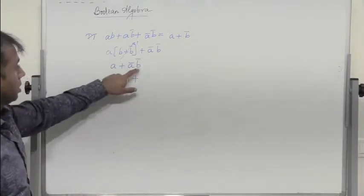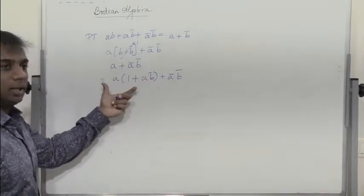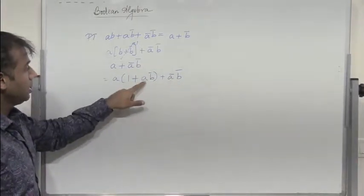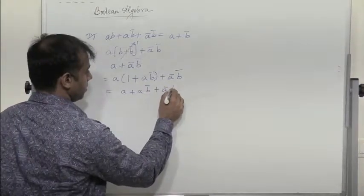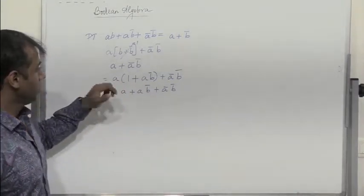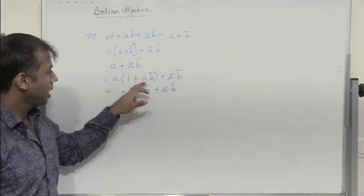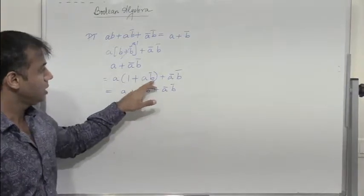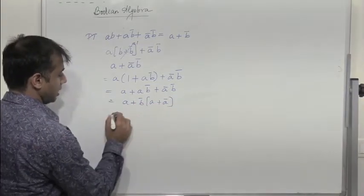A bar has to be eliminated, so I need to form A plus A bar. Using A plus A bar B equals A plus B: here B bar has to be kept common, so multiply A with B bar: A plus A B bar plus A bar B bar. Taking B bar common from the last two: A plus B bar(A plus A bar) equals A plus B bar. So the proof is complete.